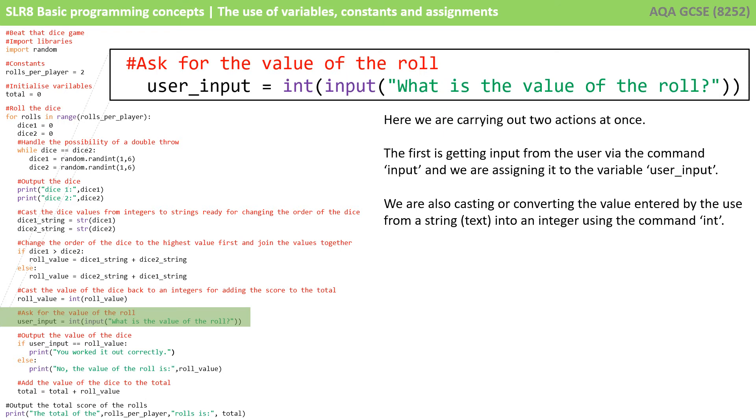Here we're carrying out two actions at once. The first is getting input from the user via the command input. And this is how we typically get input from say the keyboard and we're assigning it to the variable user input. But at the same time, we're also casting or converting the value entered by the user from a string into a number. And that's performed by the command int. That's because even if the user presses the key six on the keyboard, that's the ASCII character six. If we want it stored internally as a number, we have to cast it or convert it into an integer. And we do that with the int command. So there's two things happening at once in that line of code.